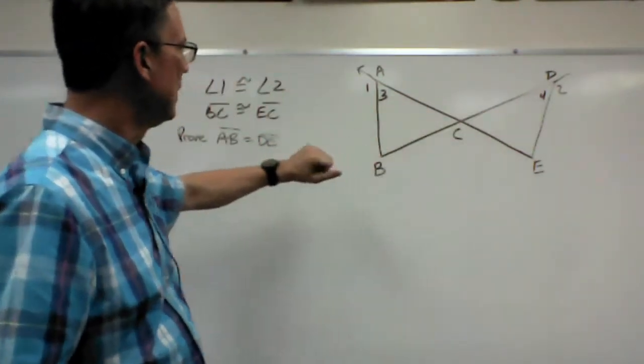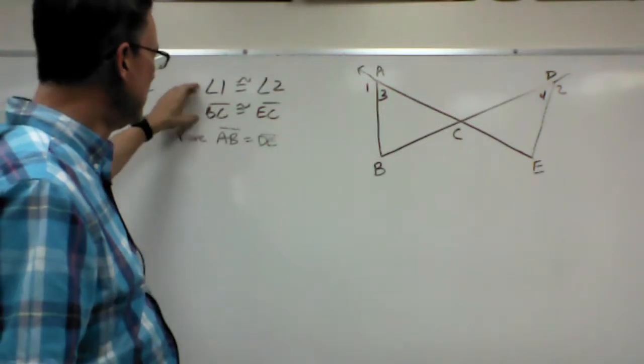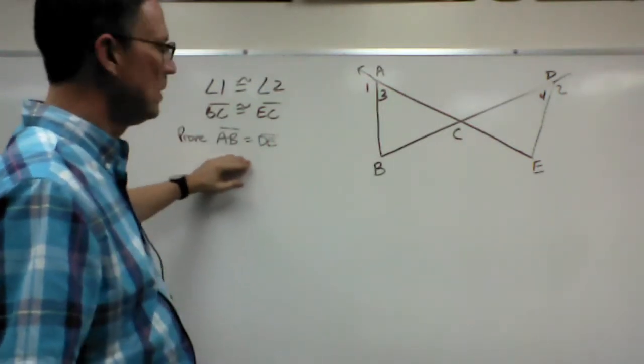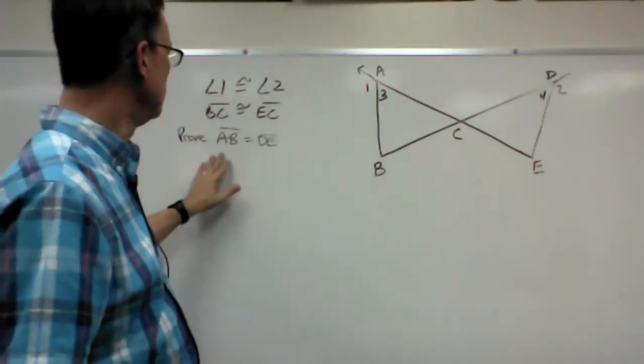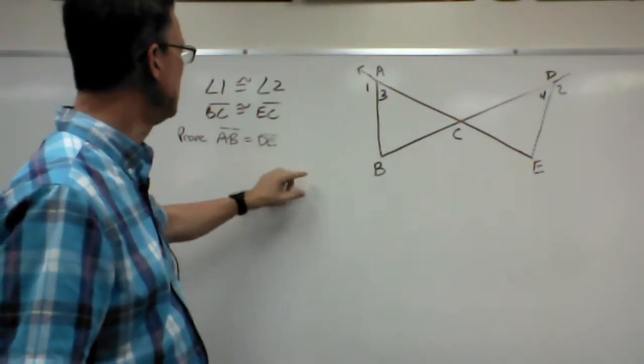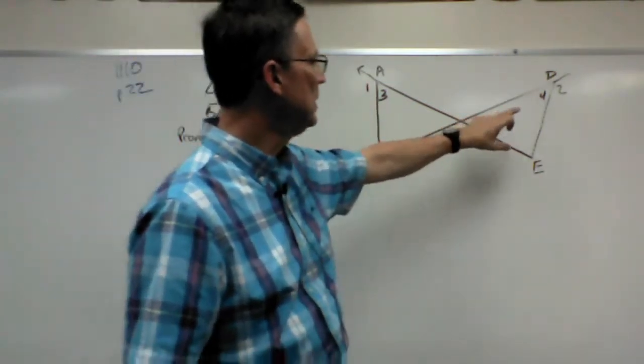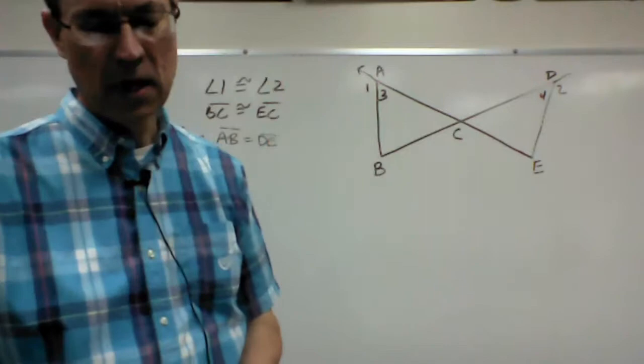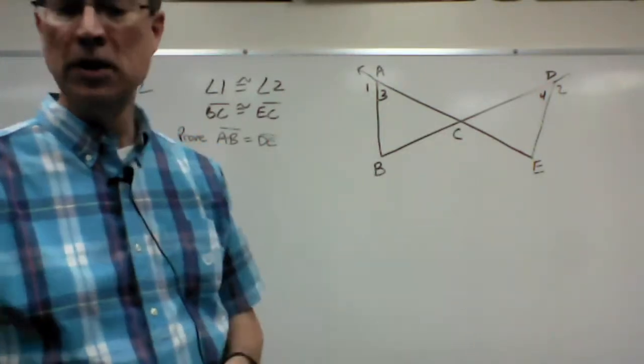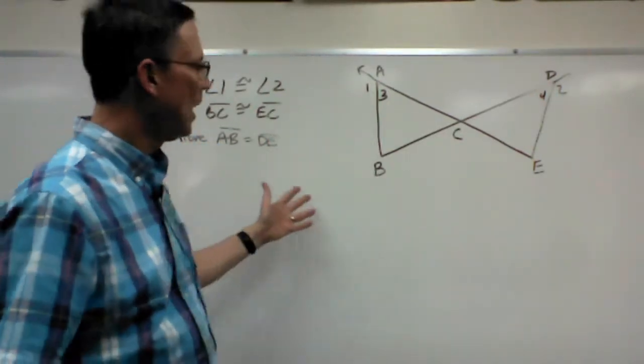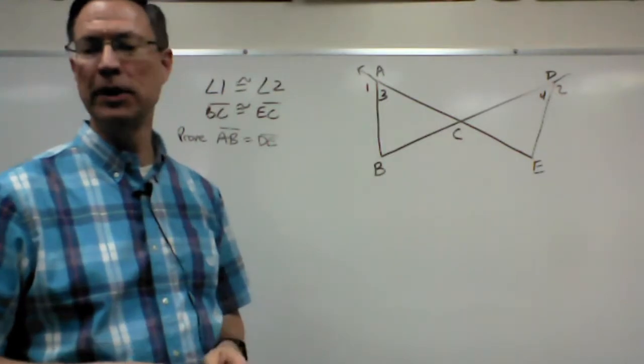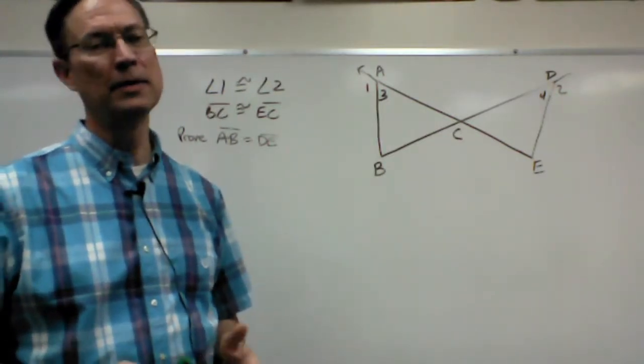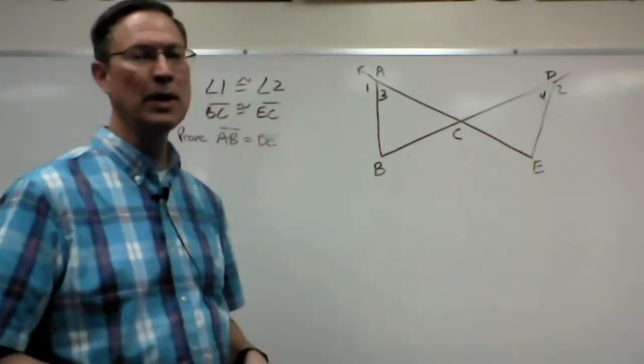They give us some given statements and then we're supposed to prove that these two down here, AB and DE, are congruent. Alright, so I'm going to talk through this. I'm not going to write everything up here, but number one is you just take this information, write it down, and that's given. That part's easy.